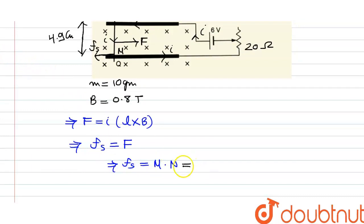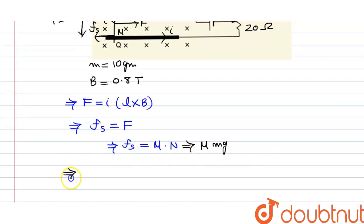So you can get friction force value. It is μmg. mg is the gravitational force acting on the wire. So we can put value of the friction force here.